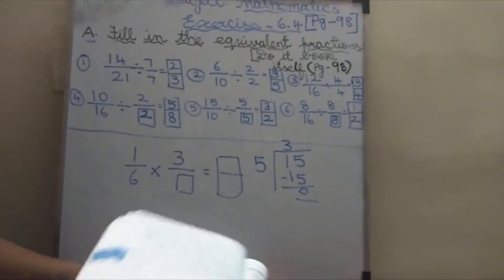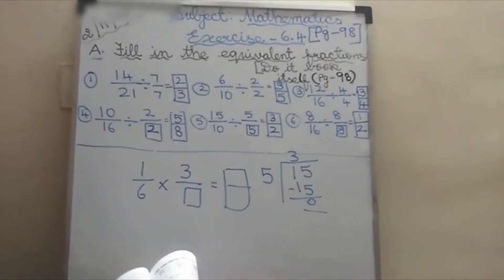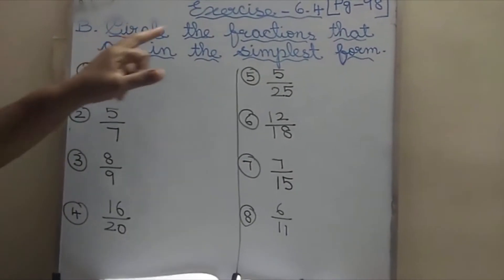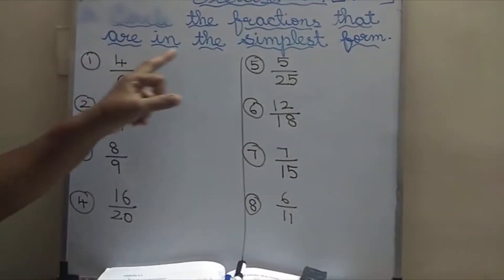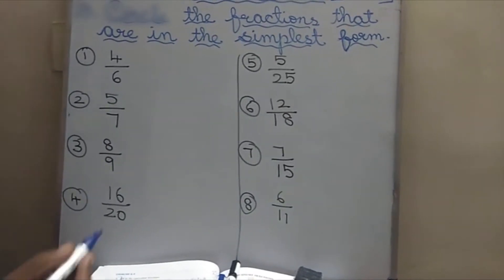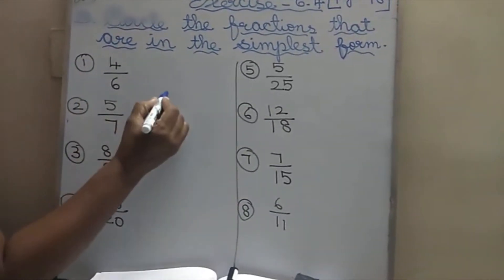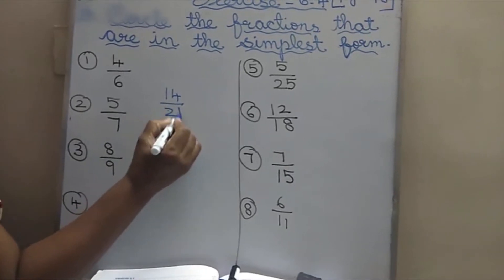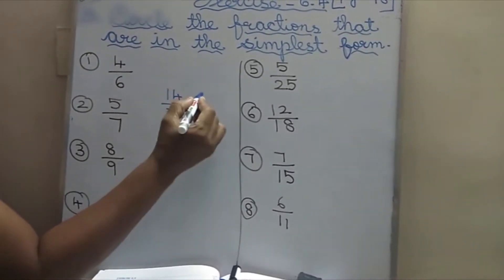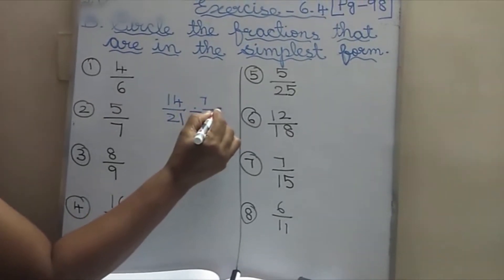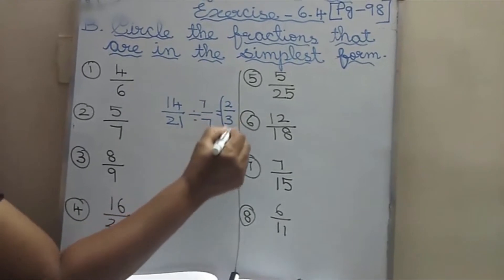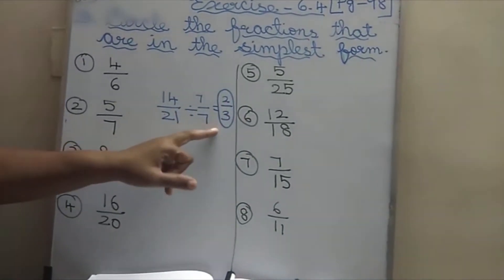We will move on to the second part. The second one: circle the fractions that are in the simplest form. In the previous sum, 14 by 21 was there — we divided by 7, giving 2 by 3. So this is the simplest form. Because after dividing, we get this number, and after this we can't divide anything further. So only we call it simplest form.